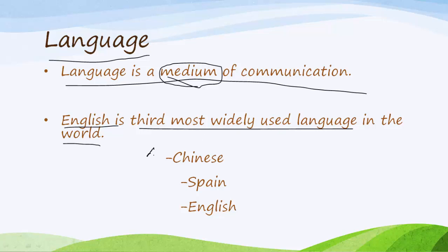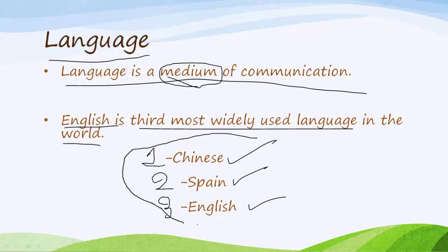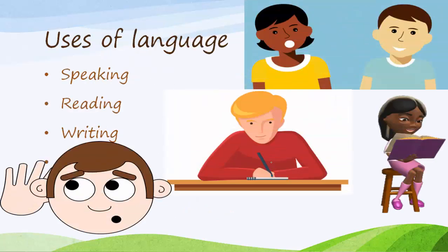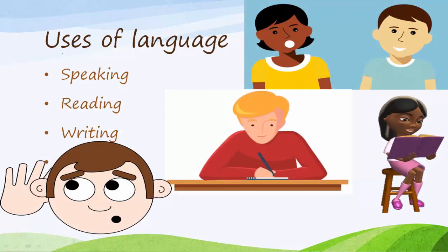The first most used language is Chinese, the second most used language is Spanish, and the third most used language is English. So first is Chinese, second is Spanish, and third is English. Now, what are the uses of language?